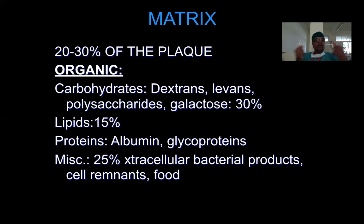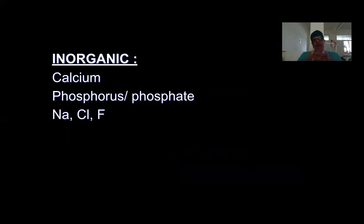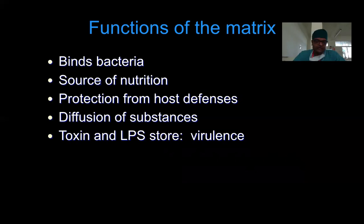Apart from carbohydrates, the matrix also contains polysaccharides, lipids, proteins — primarily salivary glycoproteins — as well as bacterial debris and food products. These form the organic content of plaque. The inorganic content is primarily calcium and phosphate, which eventually mineralize the plaque and form what we call calculus. The matrix also contains sodium, chloride, and fluoride, derived from saliva.